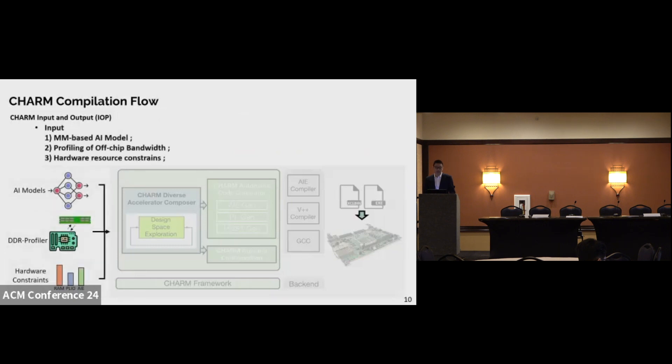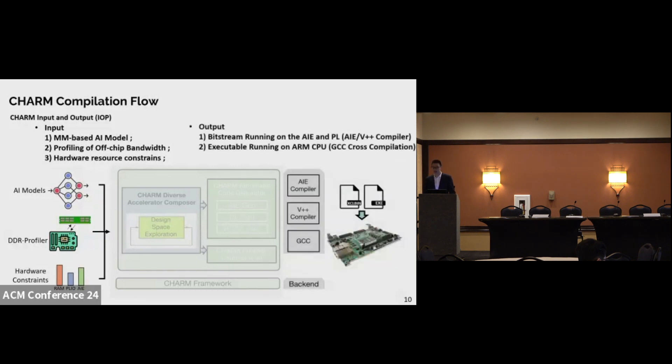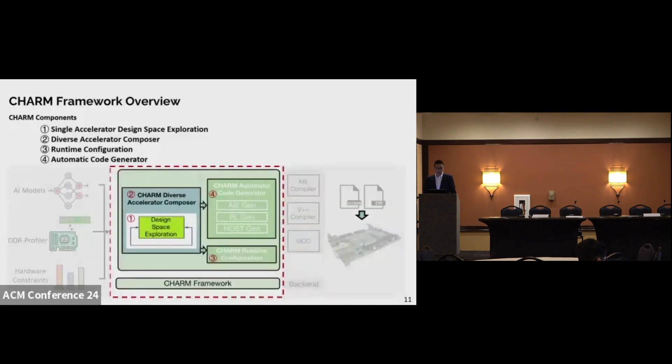We will introduce our compilation flow. CHARM takes the matrix-multiply-based AI model, for example BERT, ViT, MLP, etc., and the one-time effort profiling of off-chip bandwidth and the hardware resource constraints as input. By leveraging the backend compilers, it will automatically generate the bitstream and the host executable file that can be directly deployed on board.